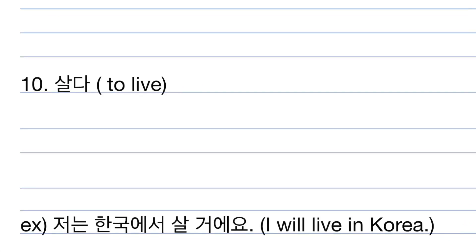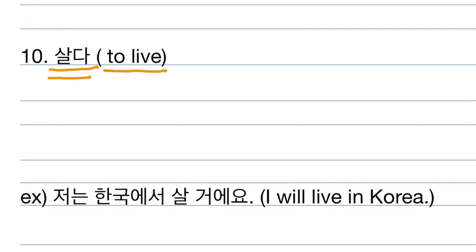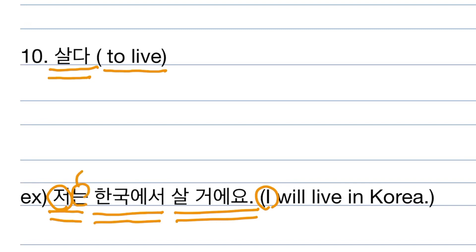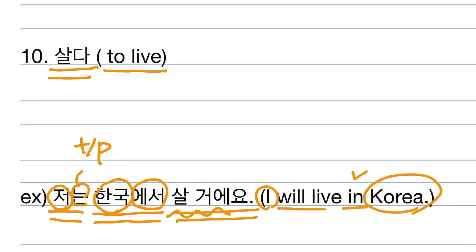The last word is 살다. 살다 means to live. Example: 저는 한국에서 살 거예요. 저 is 'I', 는 is topic particle, 한국 is Korea, and 에서 is 'in'. 살 거예요 means will live. So 저는 한국에서 살 거예요 means 'I will live in Korea.'